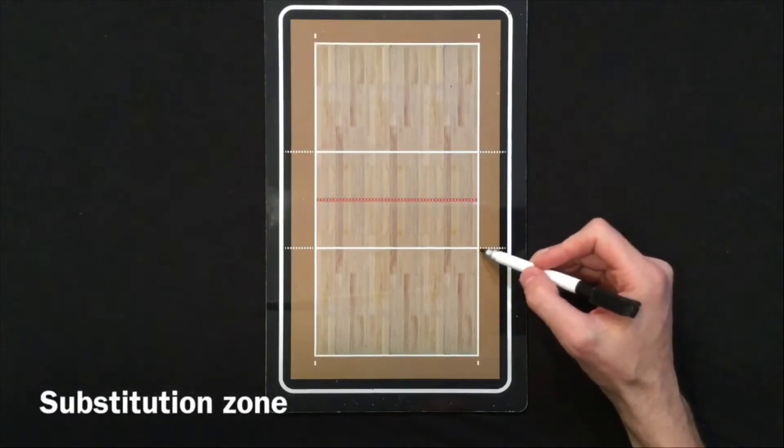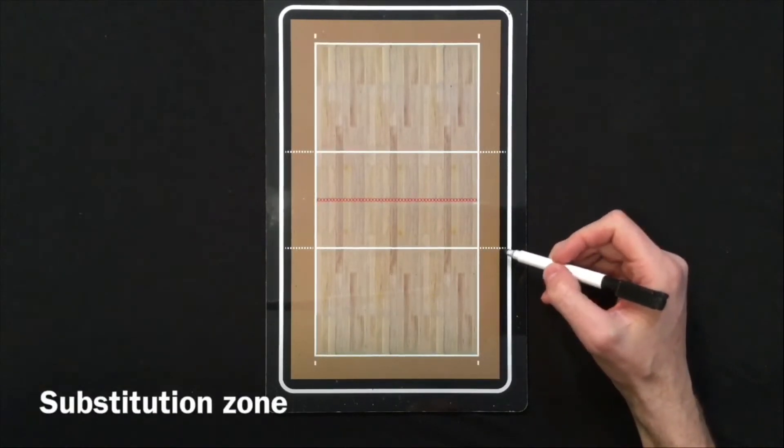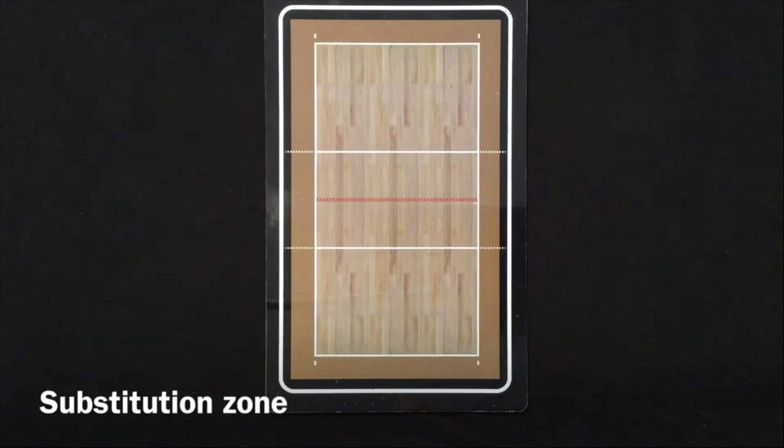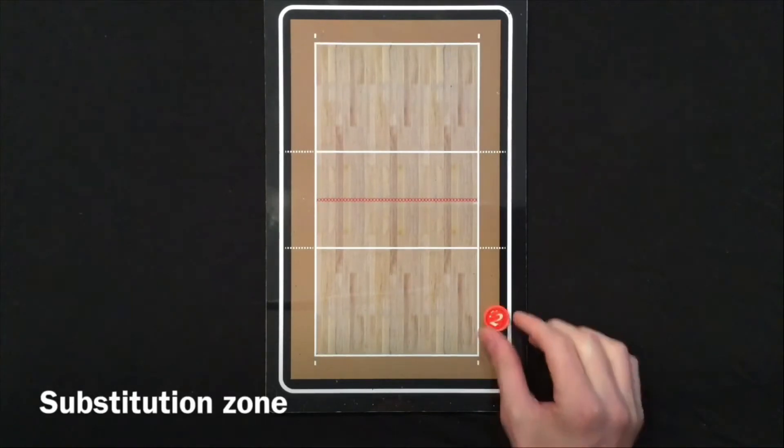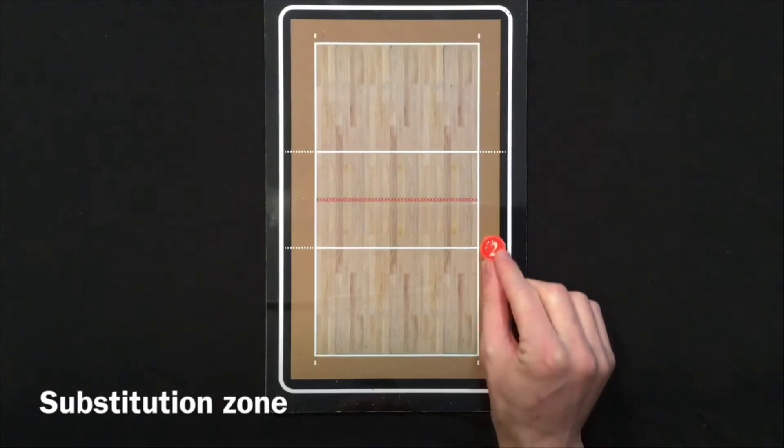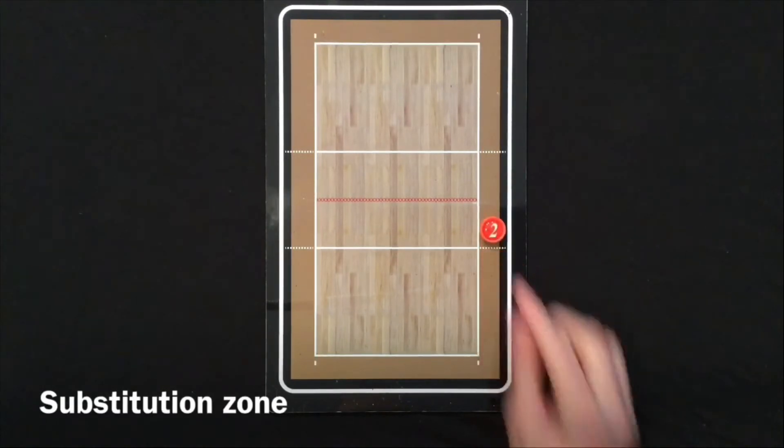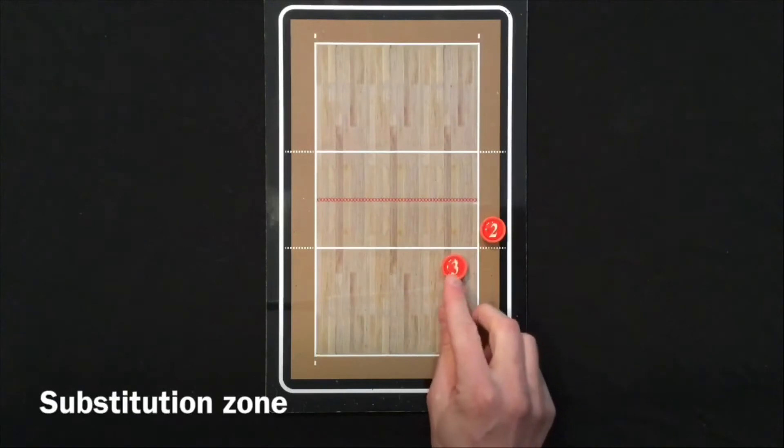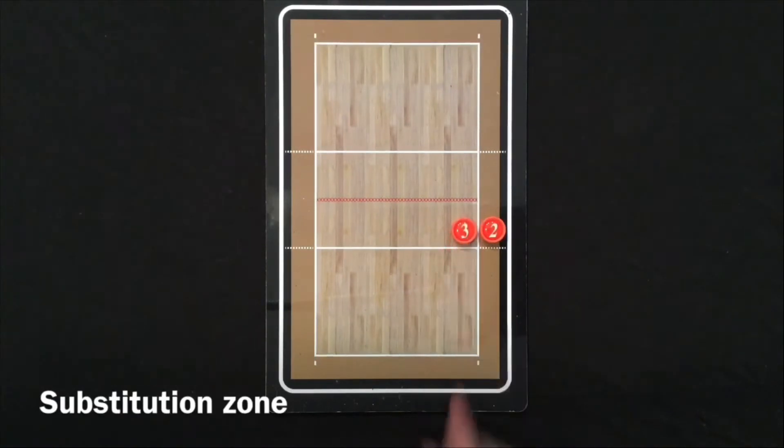Secondly, these lines here represent the substitution zone. So if a player from the bench is getting ready to substitute and as soon as they cross that dashed line, they have to be substituted or it's a delay of game, and too many delay of games results in a yellow card.